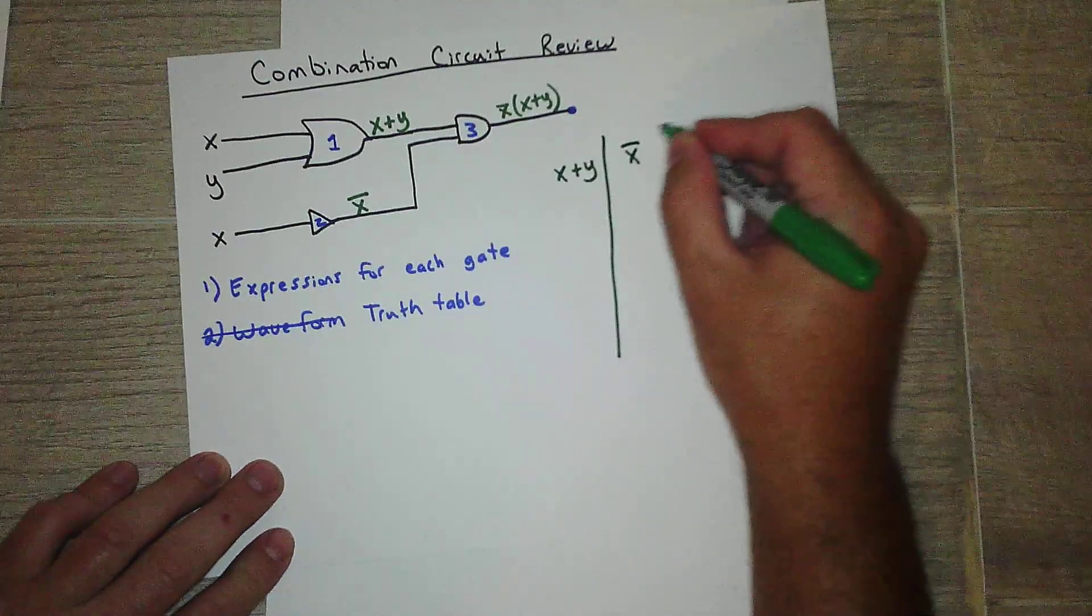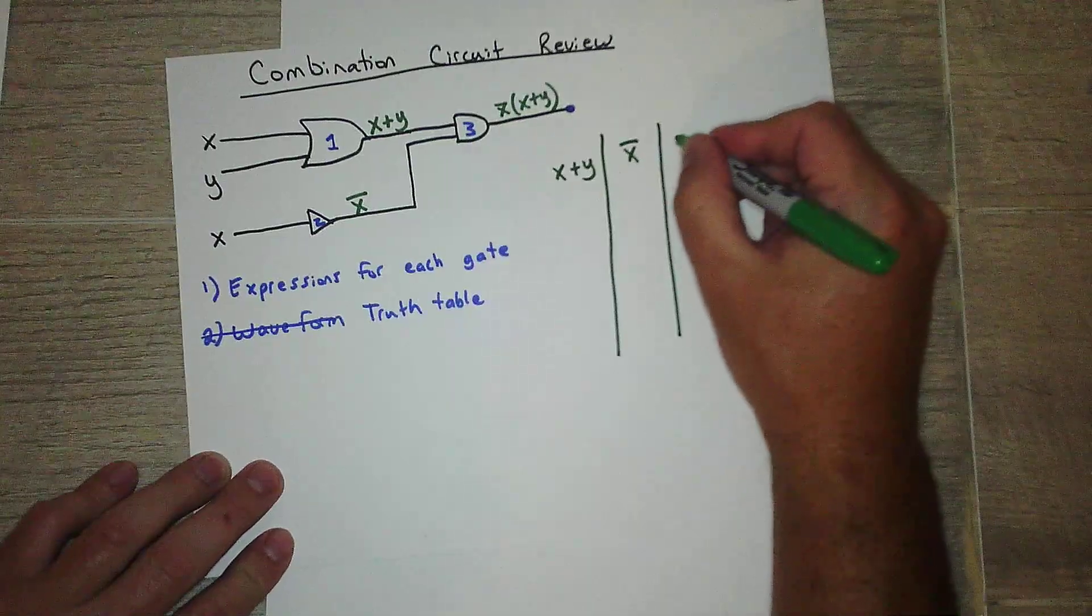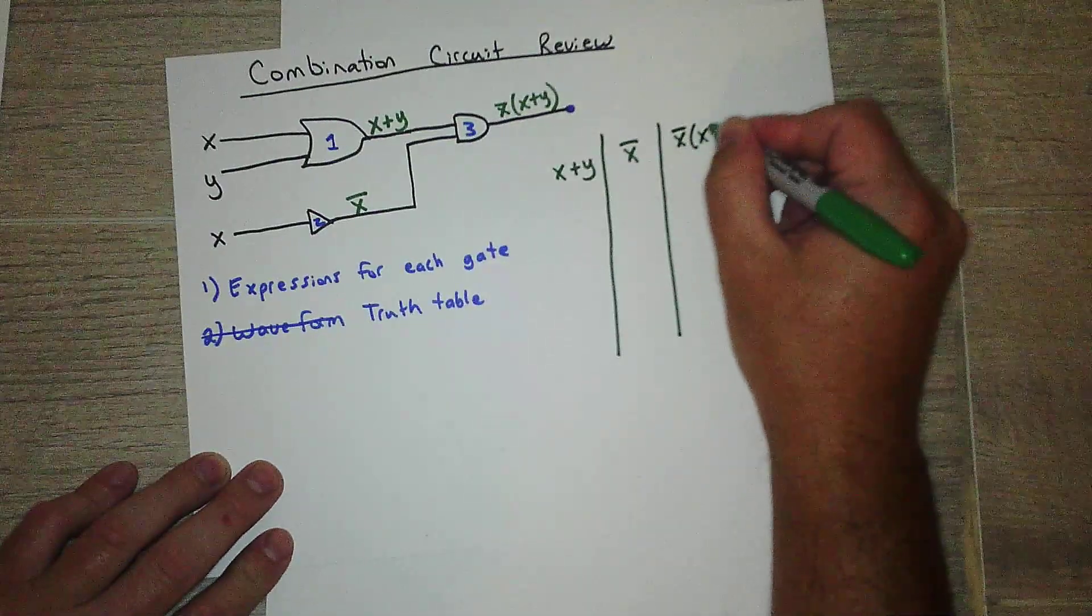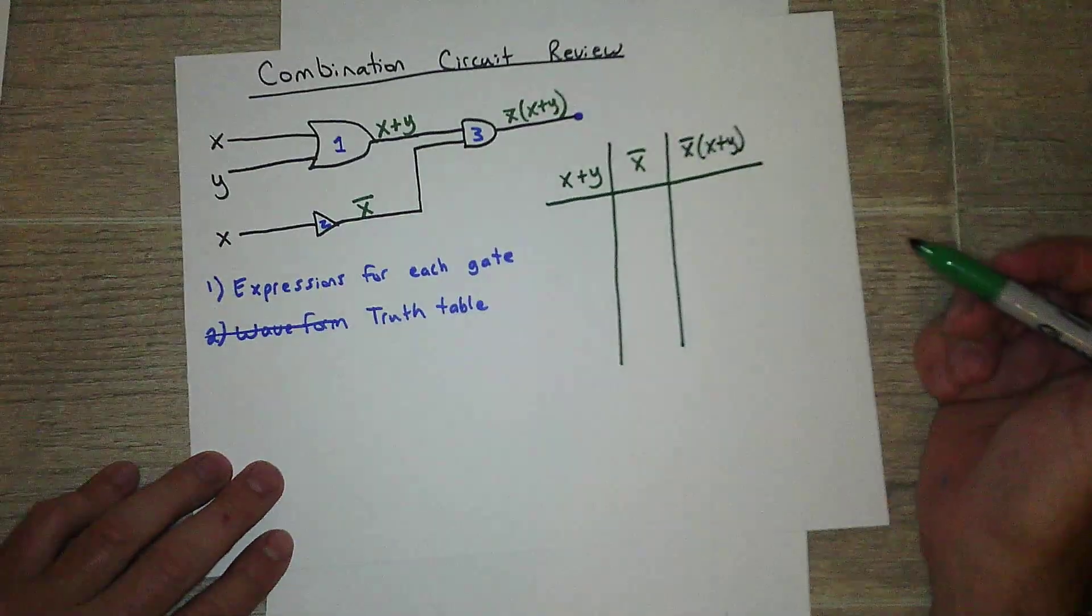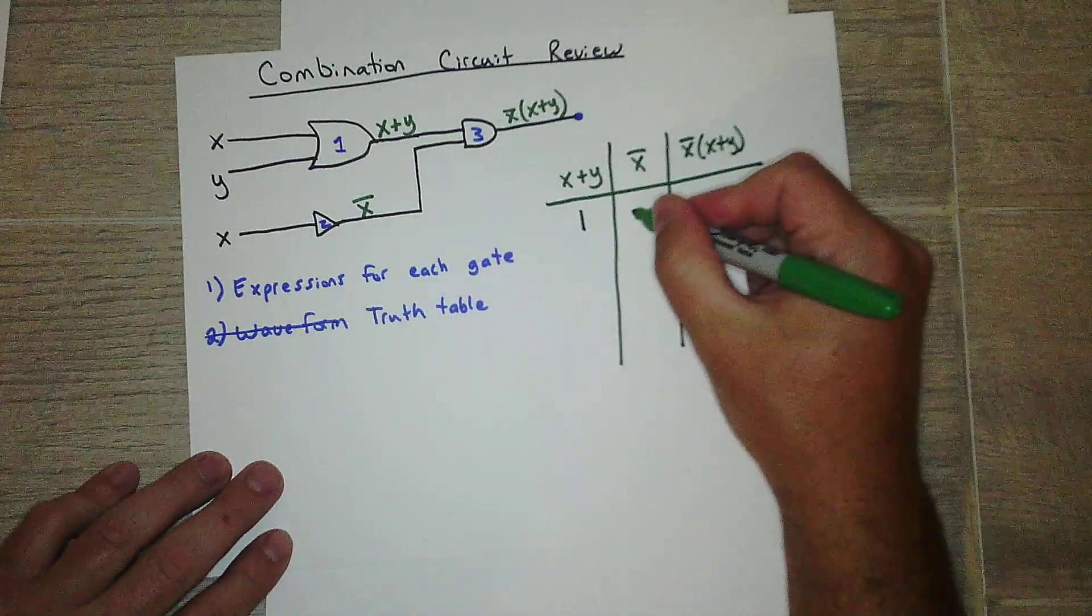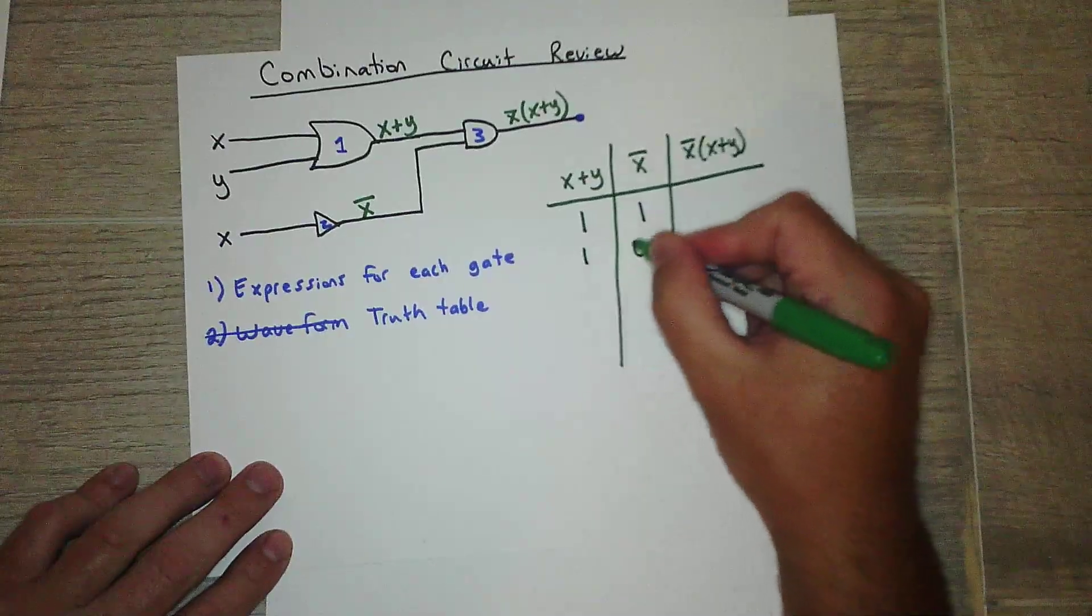And then not x. And then here's my output. Okay, so it's just two. So it's one, one. One, zero.